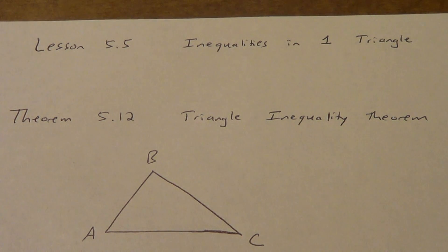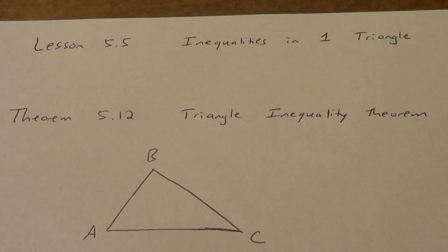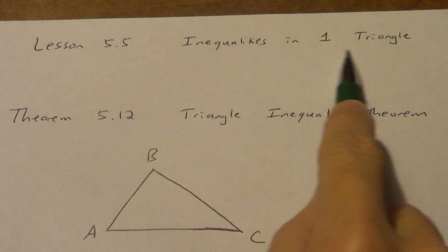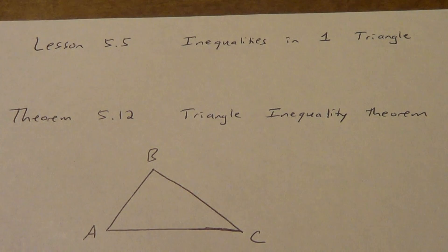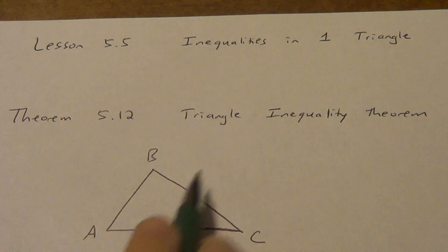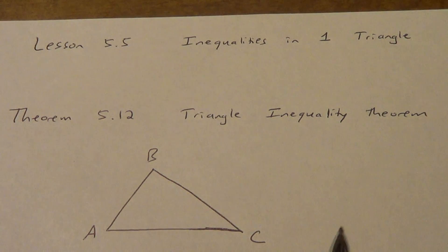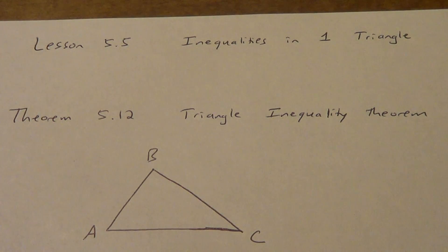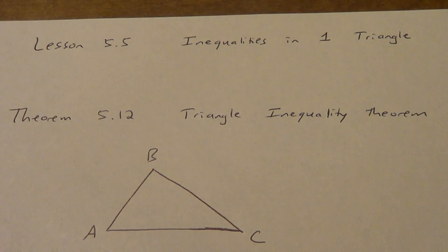Video number three for lesson 5.5, and we're almost done with this lesson. Still sticking with this idea of inequalities in one triangle, only dealing with one triangle at a time. This is called the Triangle Inequality Theorem. Inequality tells me I'm going to be dealing with less than signs and greater than signs. We're going to be dealing specifically with the sides in this triangle — nothing to do with angles, it's all about the sides.